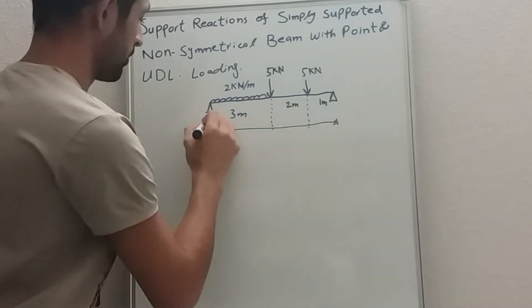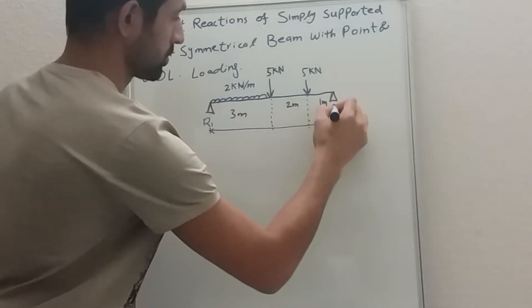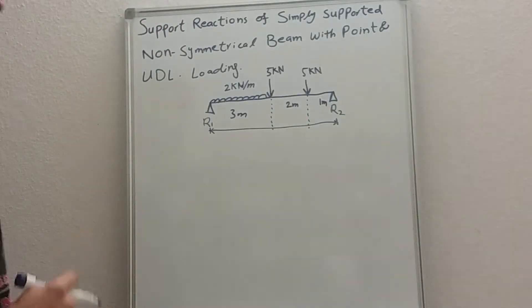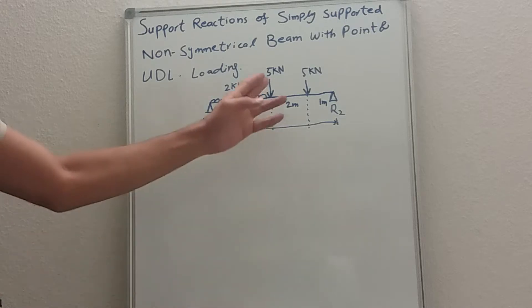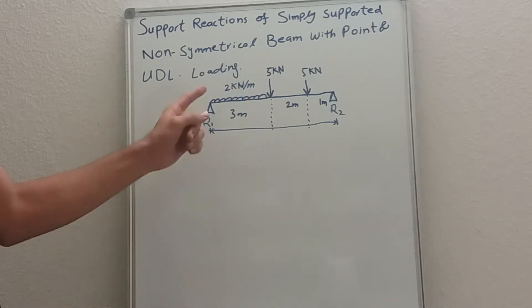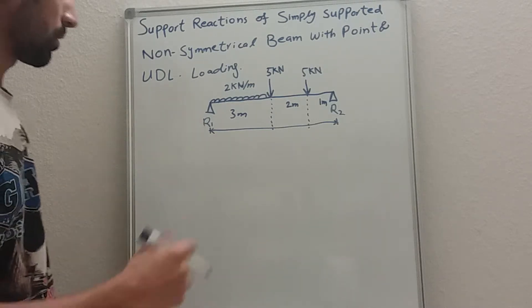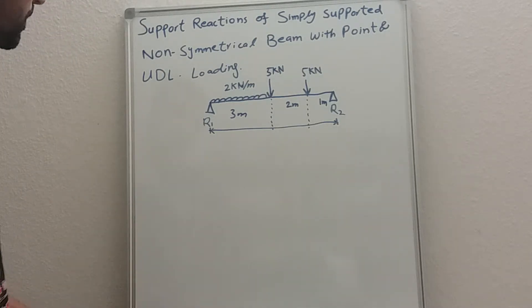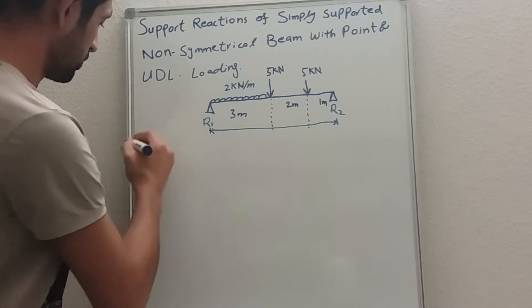We have R1 and R2. As you can see from the diagram, we have two point loads and one uniformly distributed load acting on our beam, and we have two support reactions R1 and R2 which are resisting that force. How to calculate the support reactions?